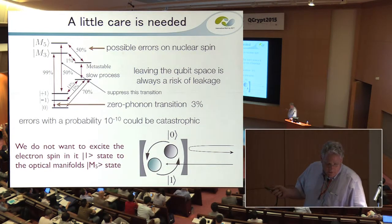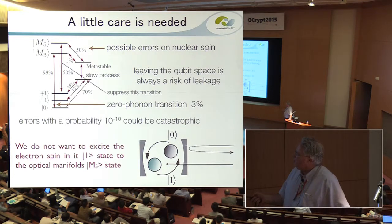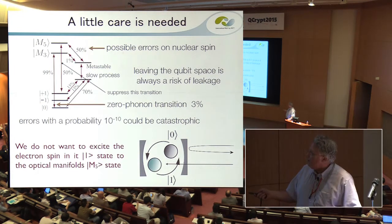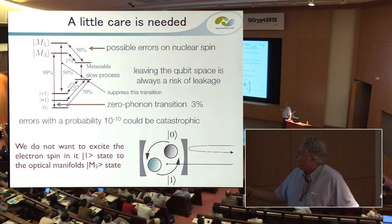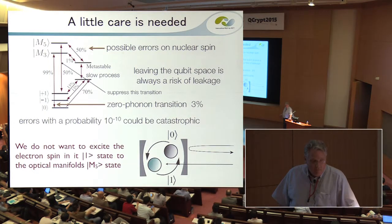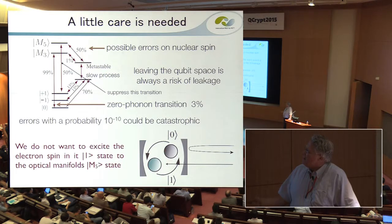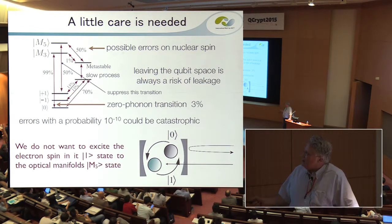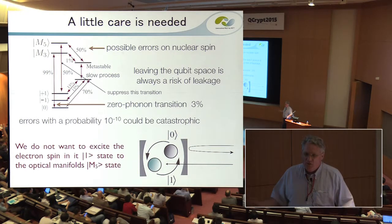Coming from computation rather than communication aspects: when we monitor the cavity — which we're going to use for measurement as well as entanglement — we're only going to use single photons; we're never going to put an intense probe beam in to measure the state of the electron spin. There is an error channel where two-photon absorption in the NV center can ionize it — the NV center goes from NV-minus to NV-zero, and it dies.